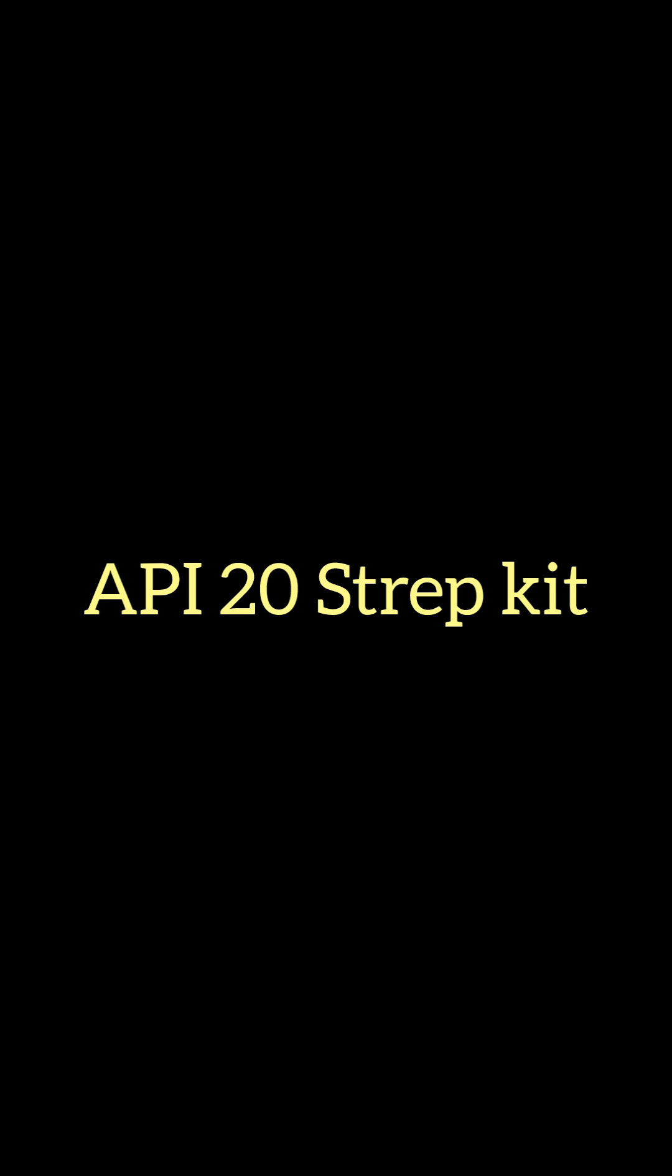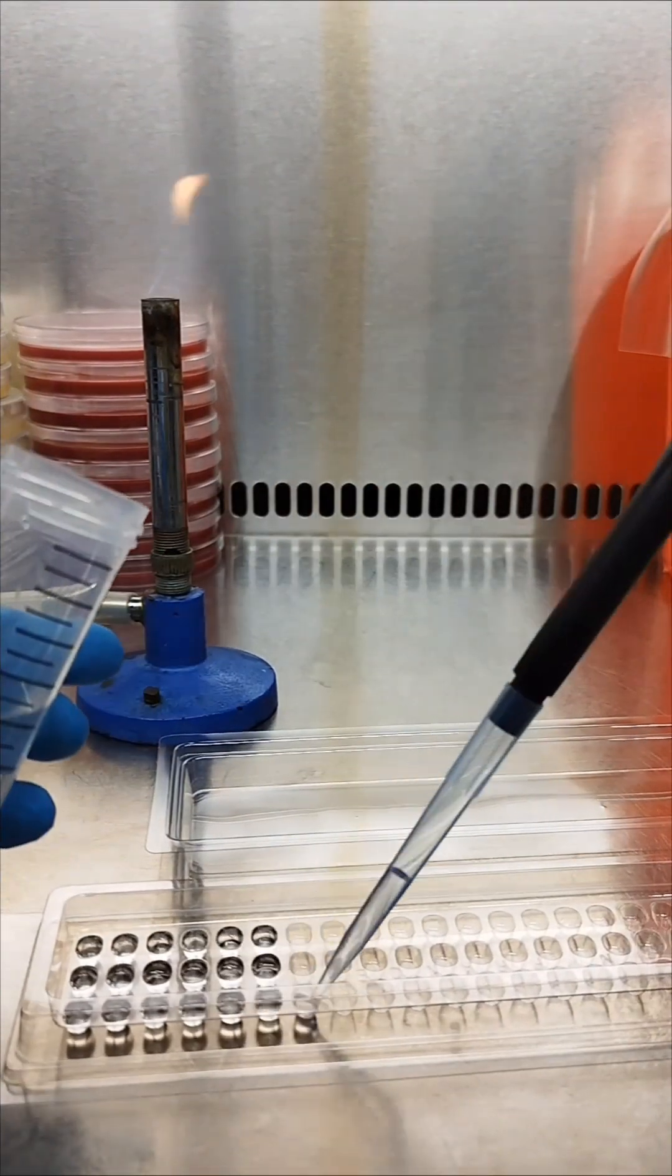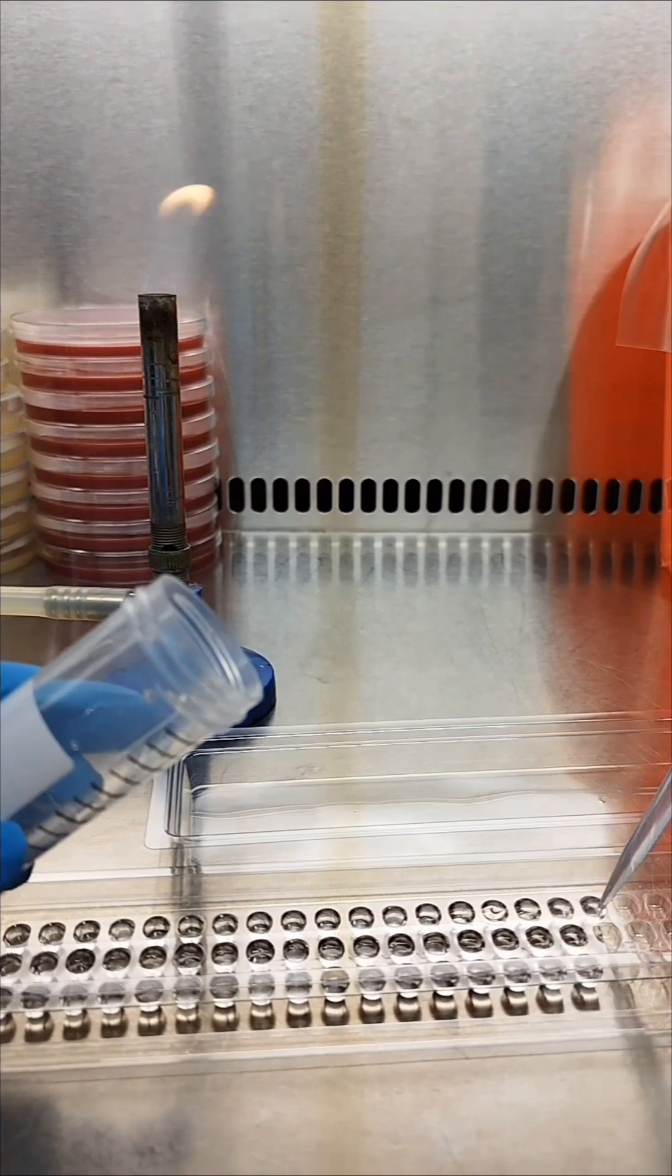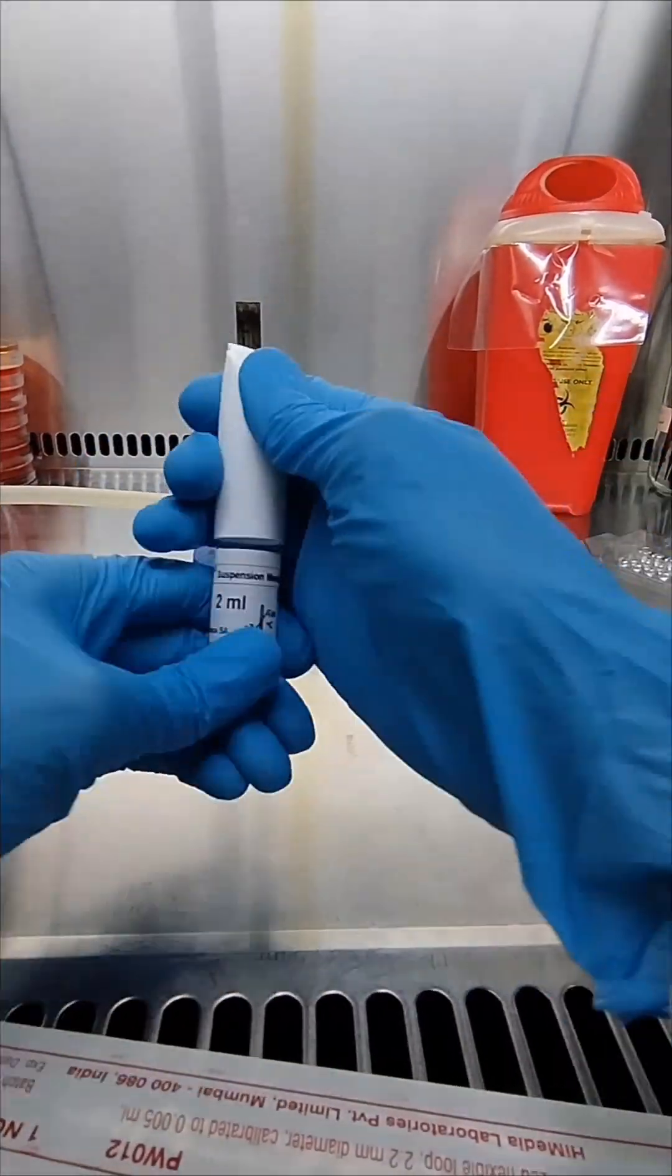This kit is used for identification of streptococcus and enterococcus. First, fill the incubation tray with the autoclaved distilled water so the strip does not dry out during the incubation.